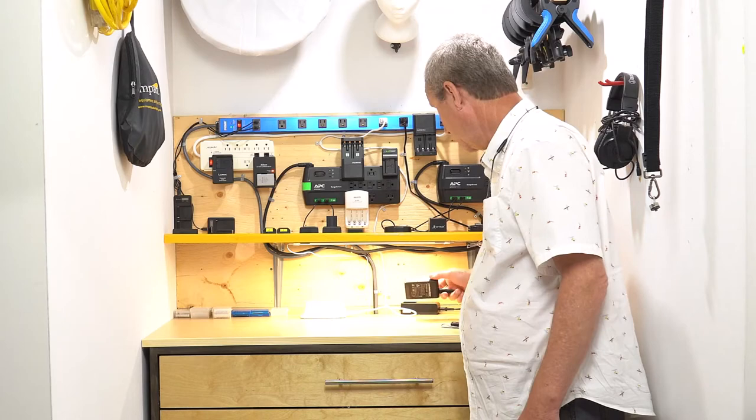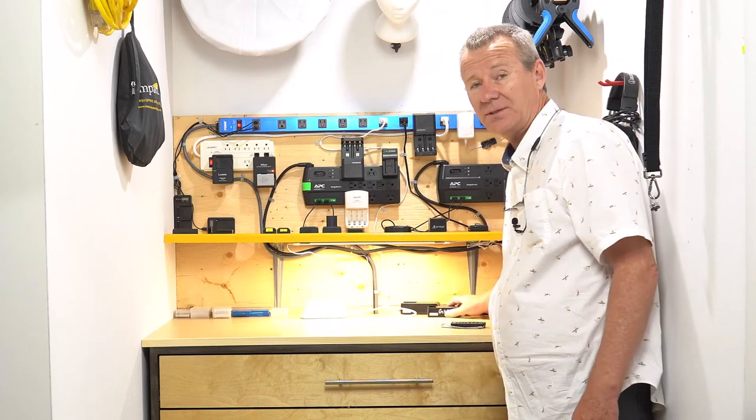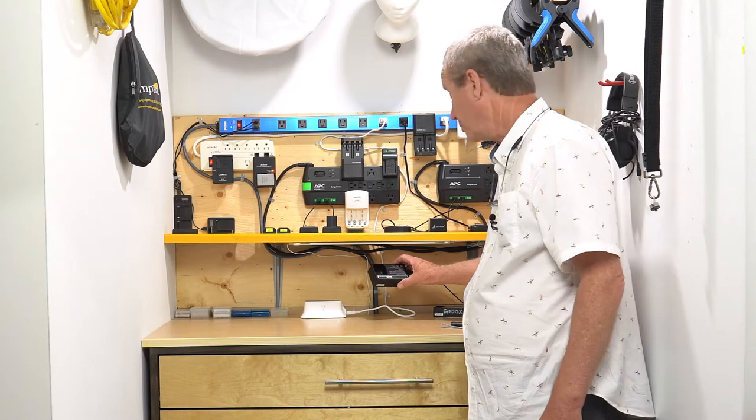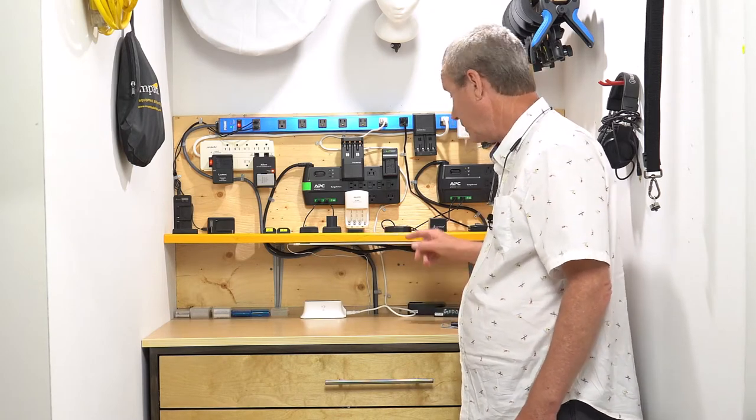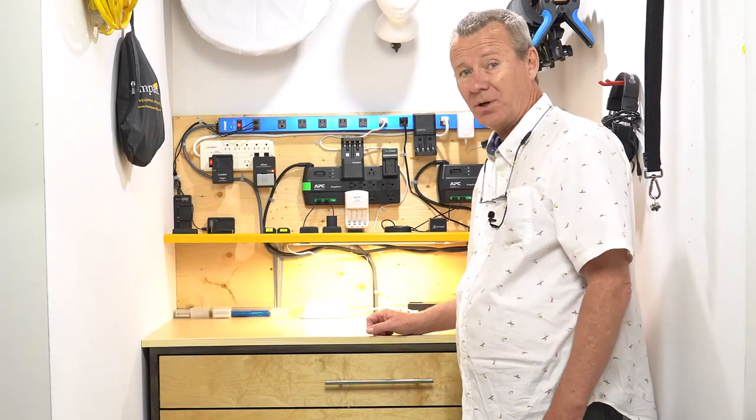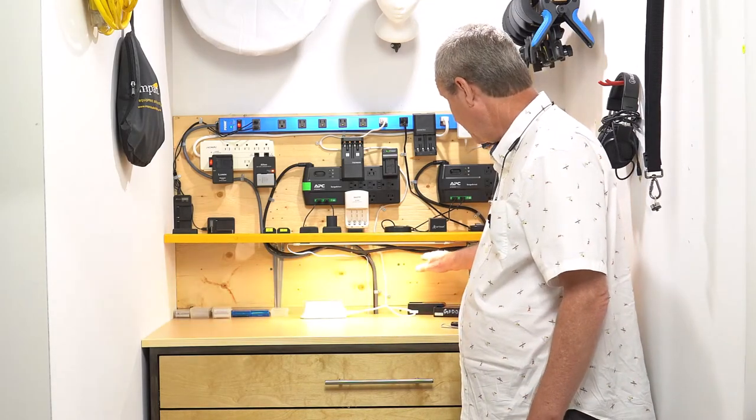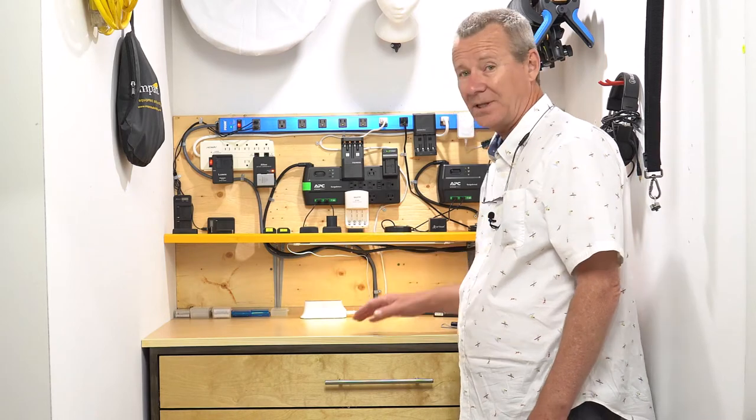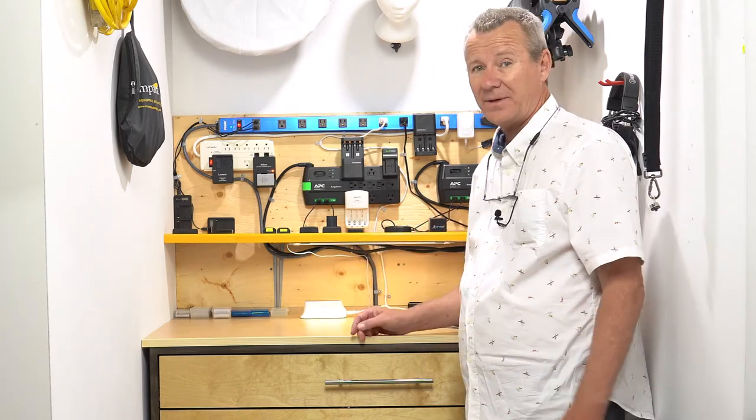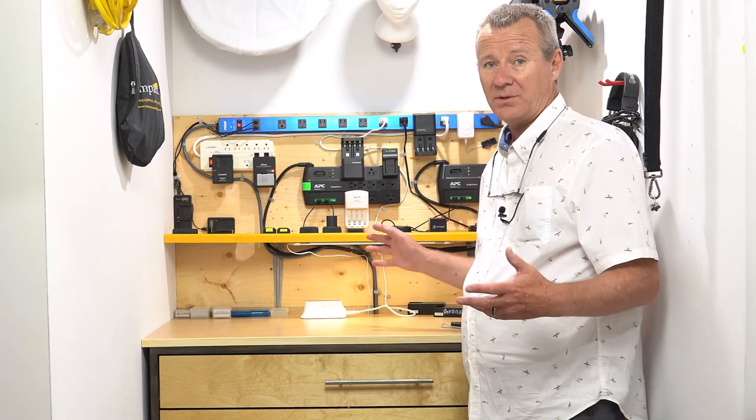And then I've got another Godox charger here for the AD600 V2 and another one here for the AD200 Pro. And what you're seeing there with the lights is that they're sensor controlled. So you can just wave your hand and turn them on and off. And if I hold this under here, you'll notice the level of light goes down. So just a lot of little fine adjustments that I made on this station.